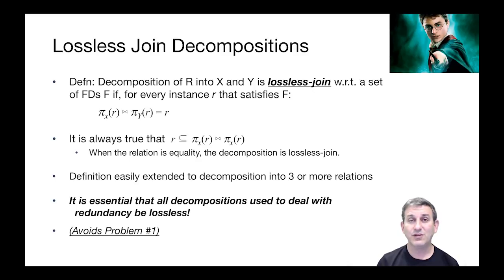Let's formalize this. The decomposition of R into X and Y is lossless join with respect to a set of functional dependencies F if for every instance little r of capital R that satisfies F, the projection of little r into X join the projection of little r into Y equals R. An instance little r of a relation R is just a state of the table - a set of tuples that have appeared in the database at some particular time. The concern is that little r might be a subset of the join of the projections, which is to say the join introduces extra junk.